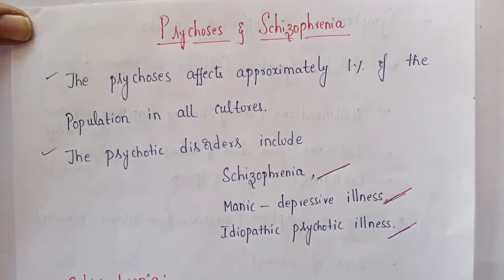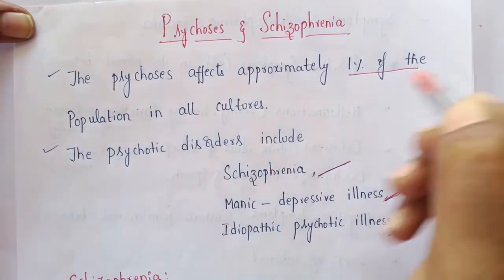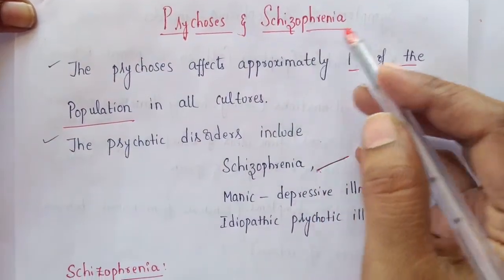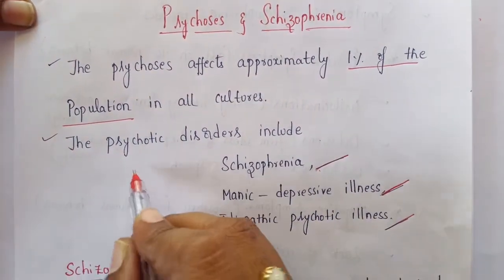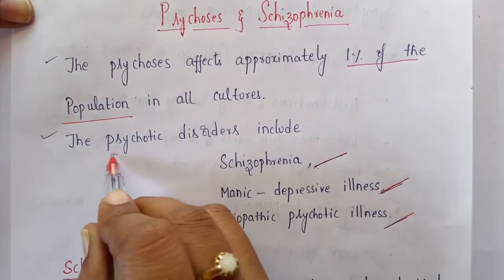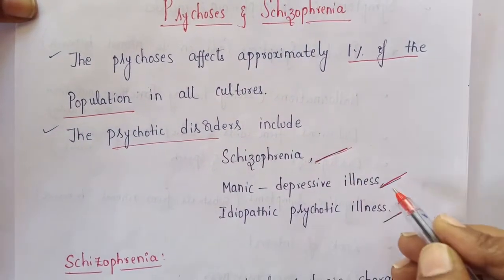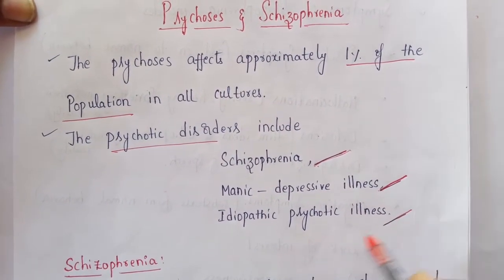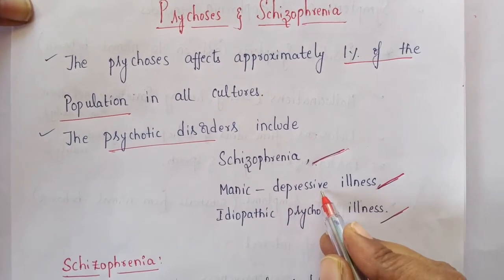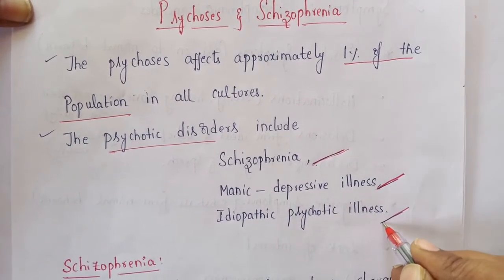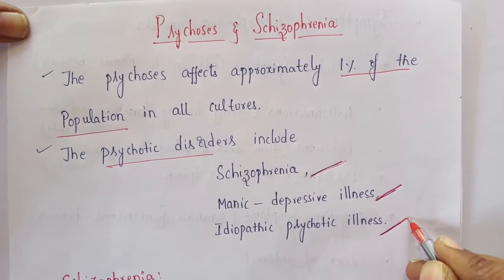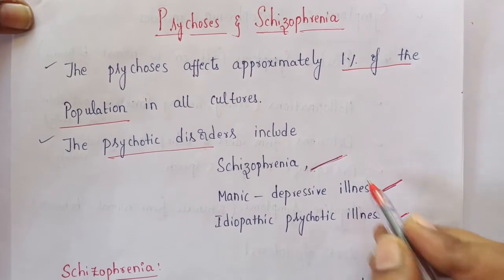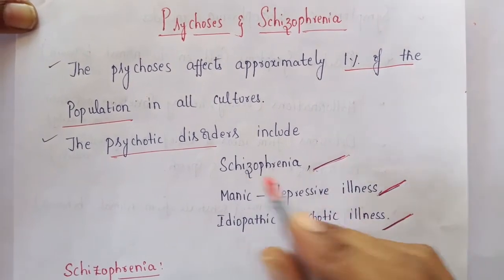Studies show that about 1% of the population is generally affected by psychosis and schizophrenia. Various psychiatric disorders include schizophrenia, manic depressive illness — meaning persons prone to both mania and depressive conditions — and third is idiopathic psychotic illness, where the causes are unknown. These are the 3 types of psychotic disorders.